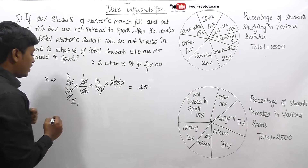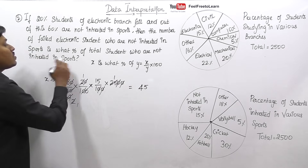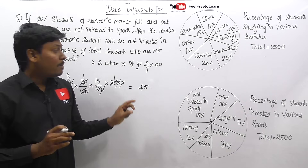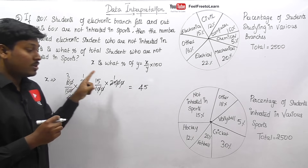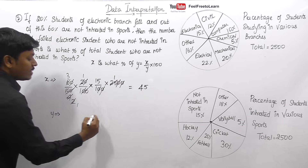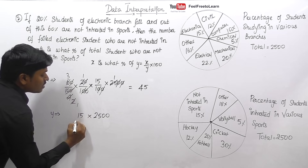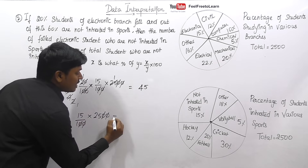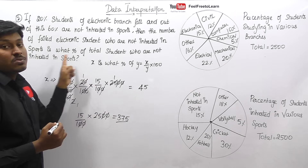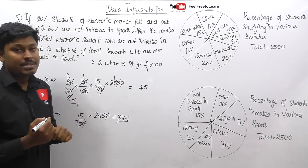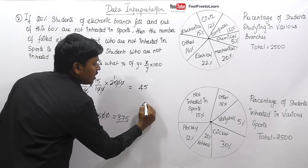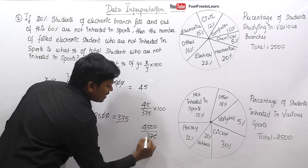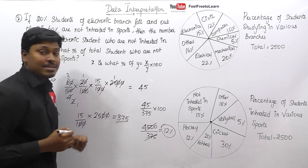Finding the denominator y: total students not interested in sports is 15% of 2500. Cancelling zeros, 25 × 15 = 375. So 375 is the total number of students not interested in sports. Now, x is what percentage of y: 45 ÷ 375 × 100 = 4500 ÷ 375 = 12%. The answer to question two is 12%.